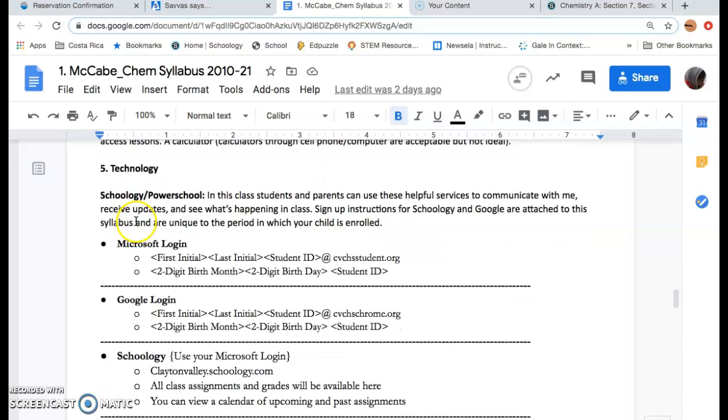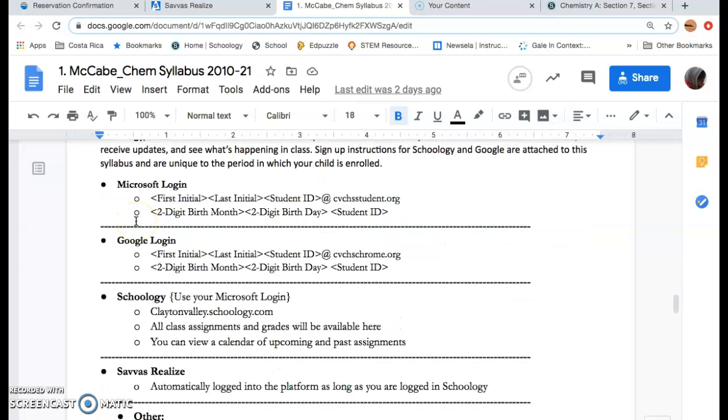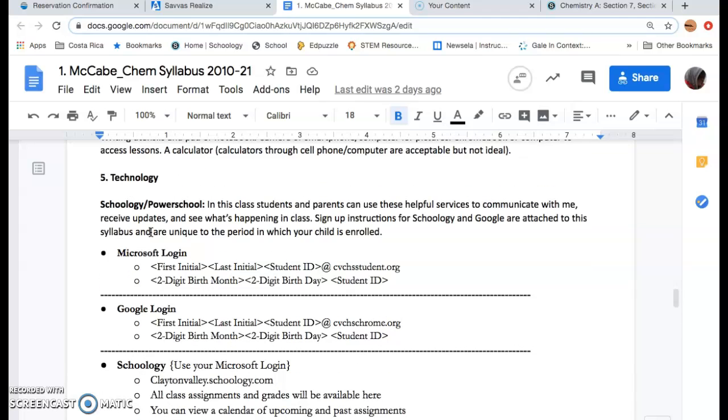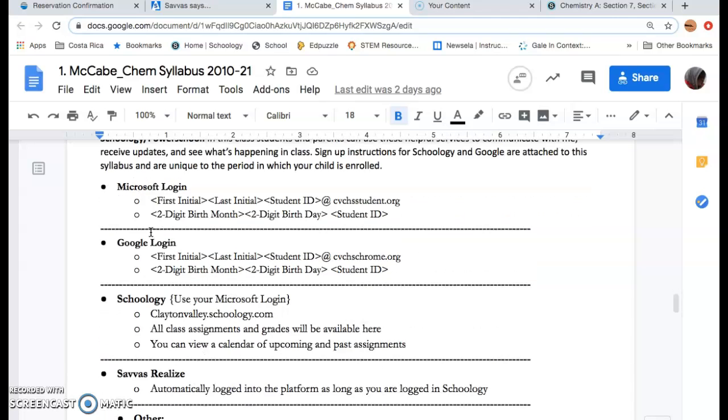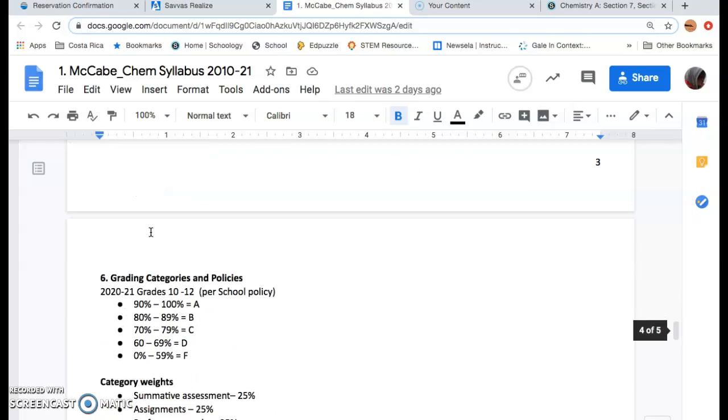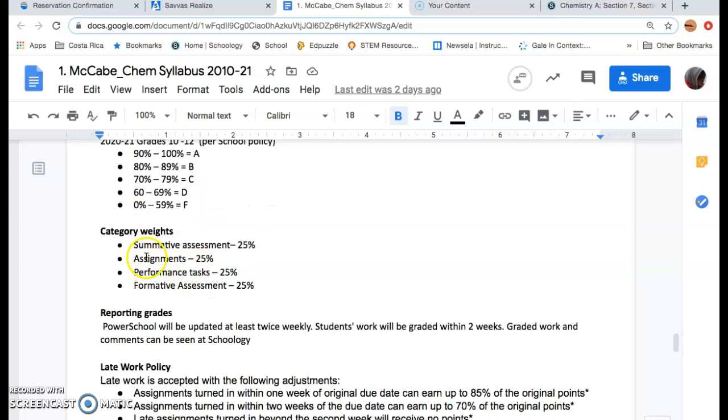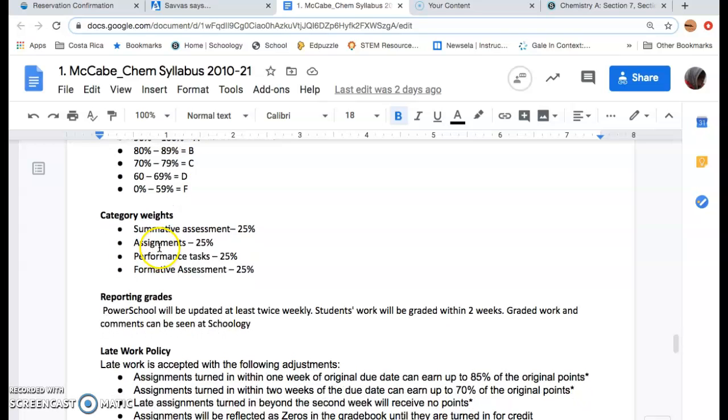Technology—you can go through this if you have any questions. Just again put it on the forum, and I'll go through the Schoology login with you guys during orientation. Grading categories and policies—this is per school policy. If you want to know what an A means, what a B means, that's what it is. Category weights—there are four categories in this classroom. Summative assessment, which you can take as your final or midterm or a unit test.